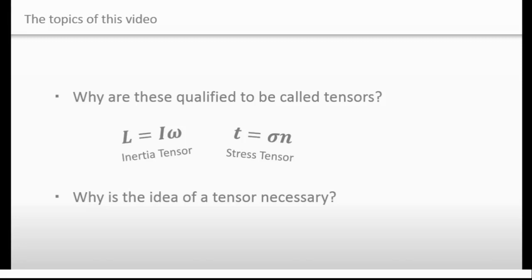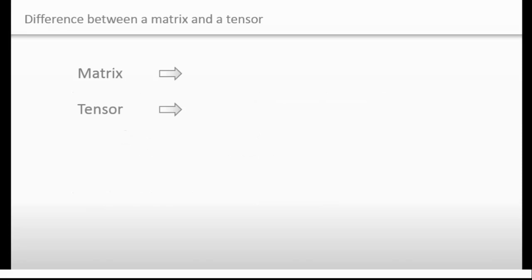Before moving to the first topic, let's see the difference between a matrix and a tensor briefly. To put it simply, a matrix is just a box that organizes numbers, while a tensor is one of linear functions.